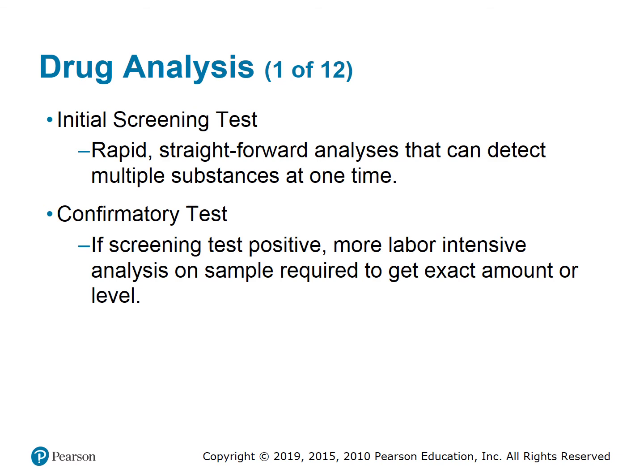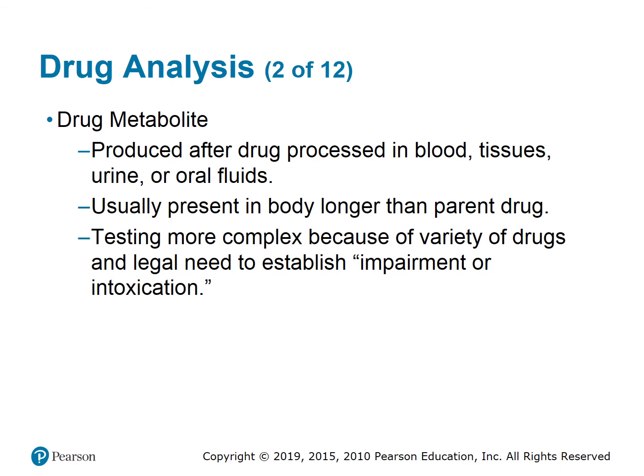The initial screening test is a rapid, straightforward analysis that can detect multiple substances at once. The confirmatory test is required if the screening test is positive — it is a more labor-intensive analysis on the sample required to get an exact amount or level, and can identify multiple substances. A drug metabolite is produced after the drug is processed in the blood, tissues, urine, or oral fluids, and is usually present in the body longer than the parent drug. Testing is more complex because a variety of drugs and legal need to establish impairment or intoxication.